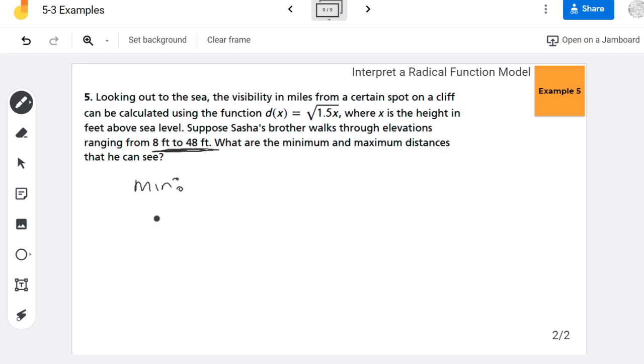So his minimum distance out to sea that he'll see occurs when we evaluate the function at 8 feet. And then his maximum distance that he can view occurs when he evaluates the function at 48 feet.